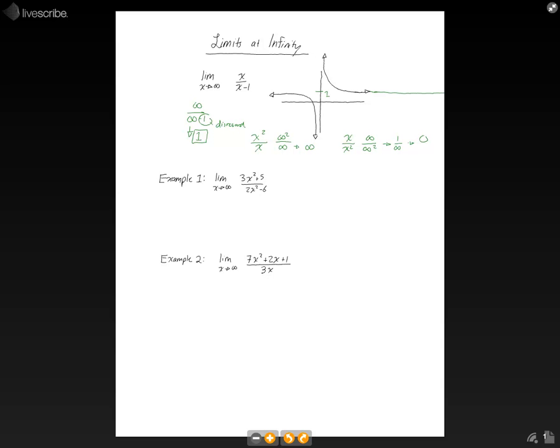Basically, what you want to do is find the highest power of x on the top, and the highest power of x on the bottom of the fraction, and compare them. So let's take a look at this in the example. Number one, we have the limit as x approaches infinity of 3x squared plus 5 over 2x squared minus 6.